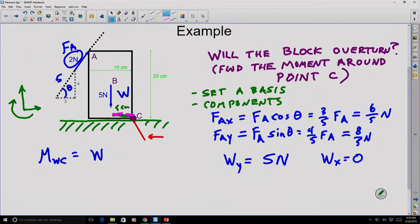So our moment around WC is going to be the weight times that change in the X position, or it's going to be five newtons times five centimeters.